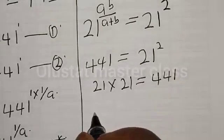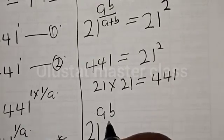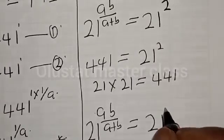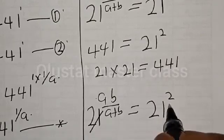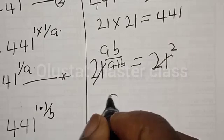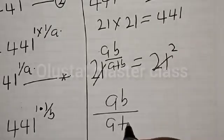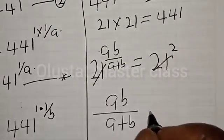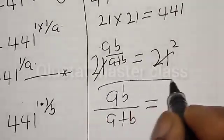So we have 21 raised to the power AB divided by A plus B is equal to 21 squared. They have the same base, so this cancels. Therefore, we have AB divided by A plus B is equal to 2. That is our final answer.